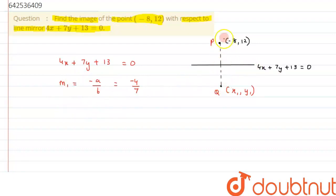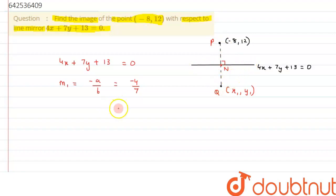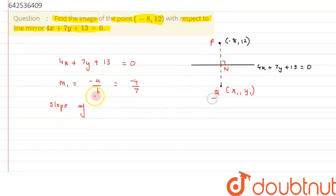Since we can see this line PQ is perpendicular to the mirror line, let's say this point is N. We know these are perpendicular and we know N is the midpoint of PQ, because object distance will be the same as image distance for a plane mirror. So now we will first calculate the coordinates of N and then we can calculate the coordinates of Q.